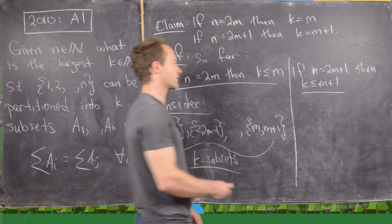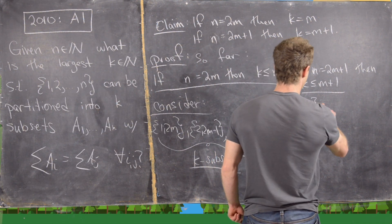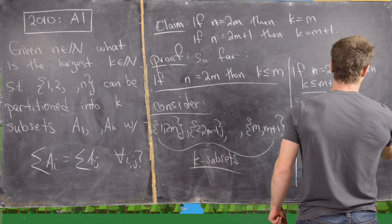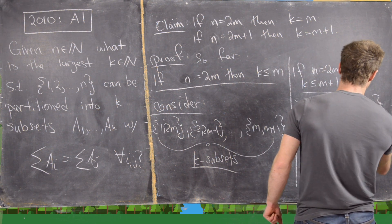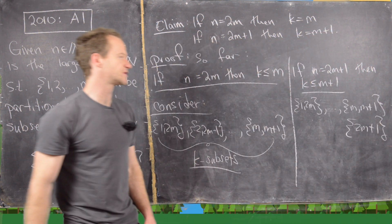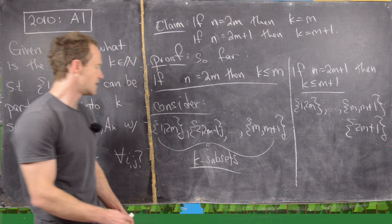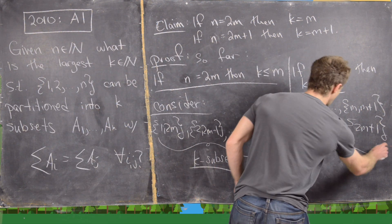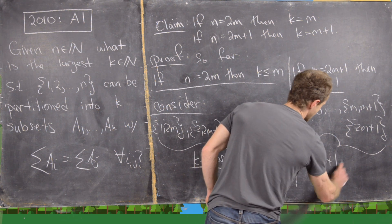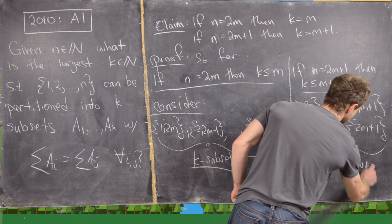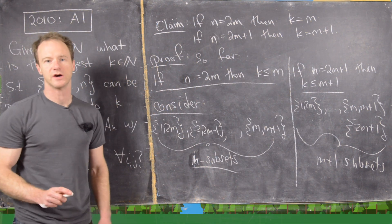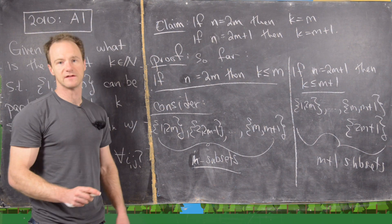For odd N equals 2M+1, we take the same pairs: {1, 2M}, {2, 2M−1}, ..., {M, M+1}, and add the singleton {2M+1}. Each subset still sums to 2M+1, and now we have M+1 subsets. This completes the solution — we've proved the upper bound and exhibited partitions achieving it, confirming K equals M when N is even and K equals M+1 when N is odd.